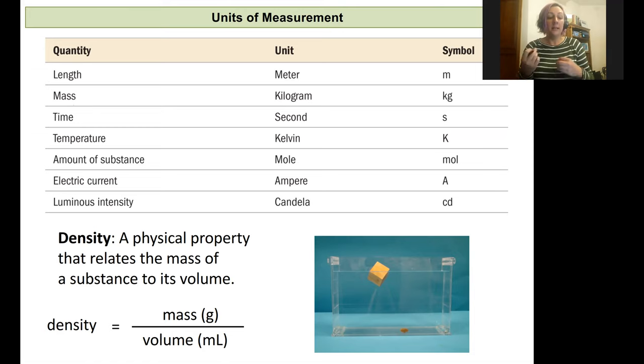Time will be seconds. Temperature will be Kelvin. The amount of something, like if you were going to count the numbers of atoms or donuts or lemons, it would be a mole. Electrical current is in amps and luminosity, which we'll actually not use at all during this class, is candela. I've got our abbreviations for these on the right hand side of this screen.